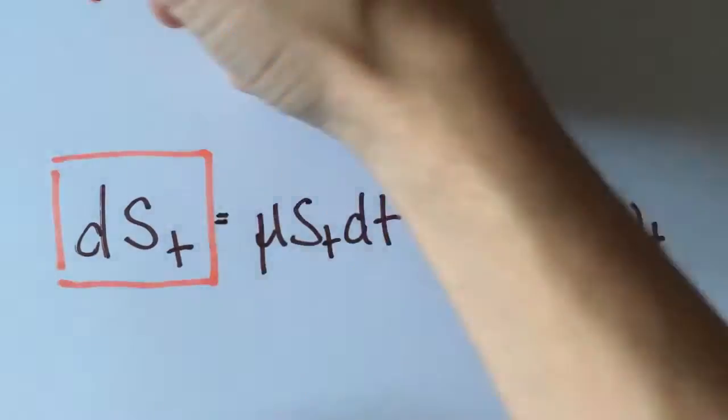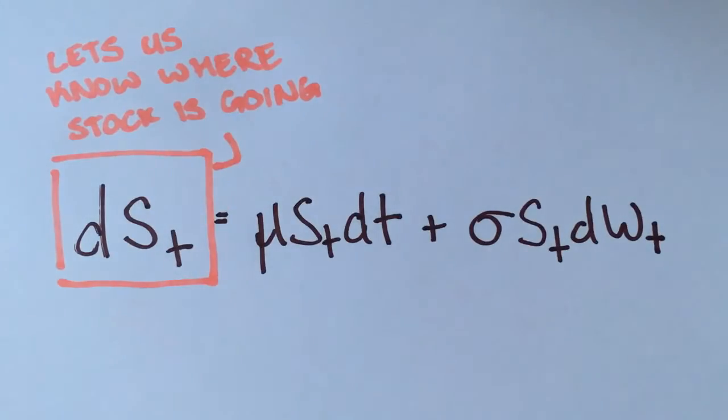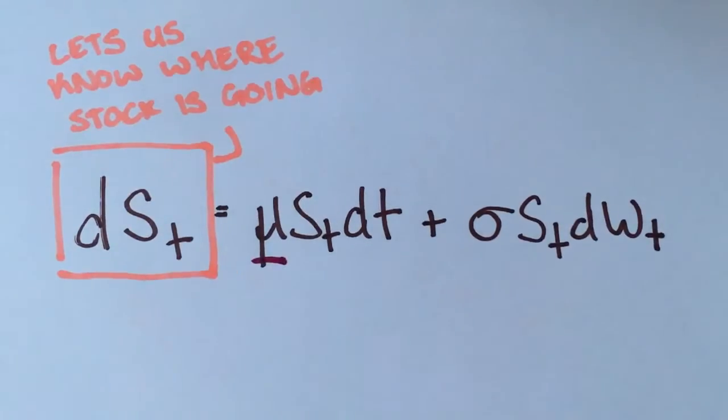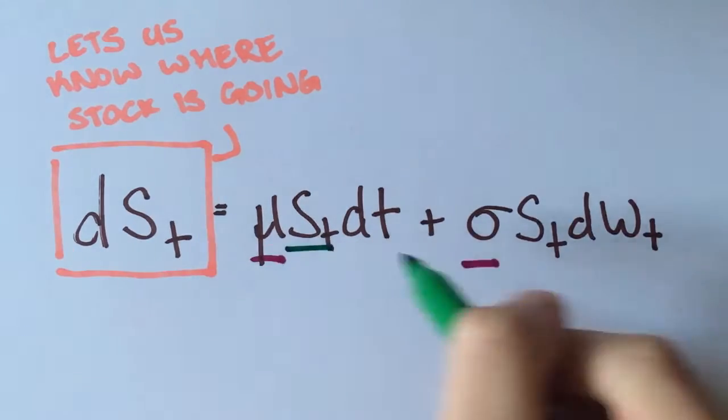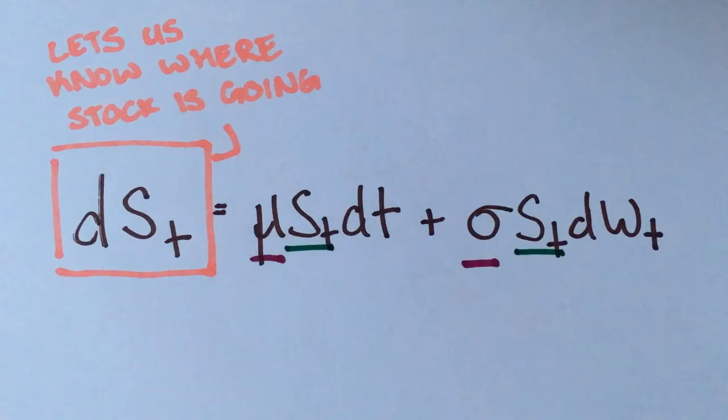Here, dSt is the change in the stock price, mu is the average return of the stock, sigma is how quickly the stock price changes, St is the stock price, dt is the change in time, and dWt correlates to the type of random motion a stock follows.